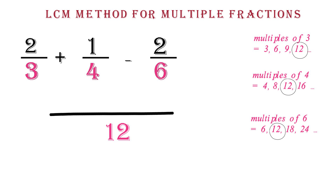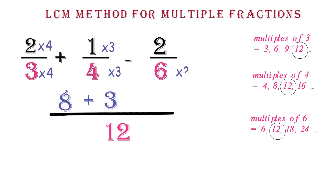We move on to step 2. 3 times what number gives 12? The number is 4. Multiply 2 by the 4 to get 8. 4 times what number gives 12? The number is 3. Multiply 1 by the 3 to get 3. Finally, 6 times what number gives 12? The number is 2. Multiply 2 by the 2 to get 4. We now move on to our final step: 8 plus 3 minus 4 gives us 7, so our final answer is 7 over 12.